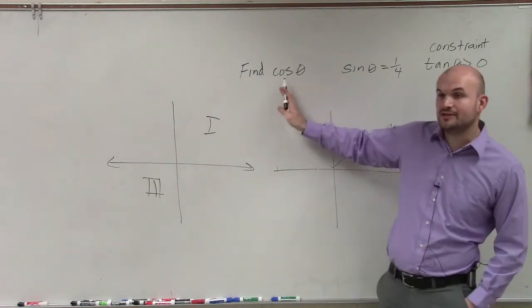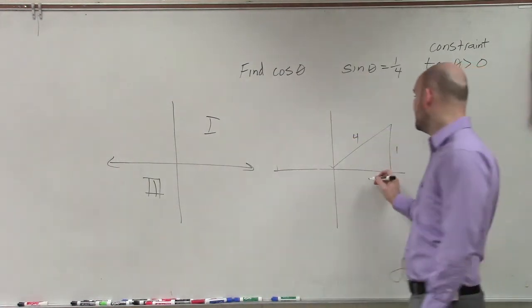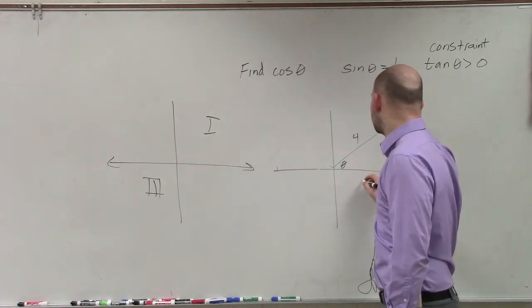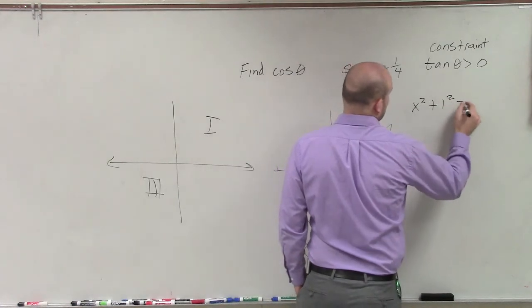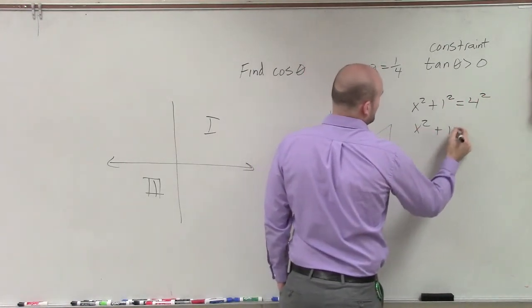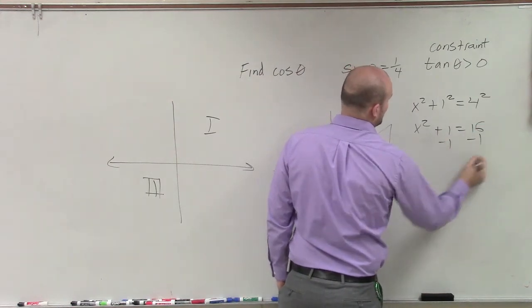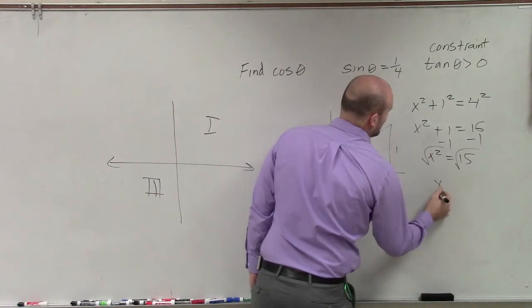Now it asks us to find the cosine of theta. Well ladies and gentlemen, the only way we find cosine of theta is we need to figure out what that is. So now we can use Pythagorean theorem. So x squared plus 1 squared equals 4 squared. x squared plus 1 equals 16, minus 1, minus 1. x squared equals 15, square root, square root.